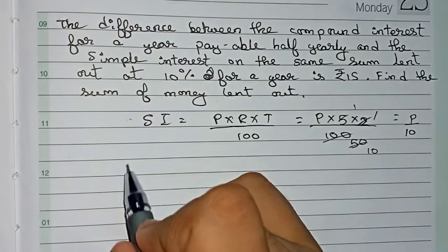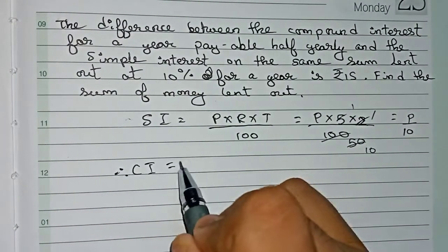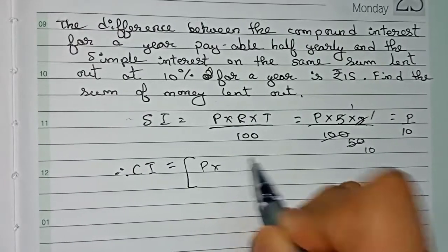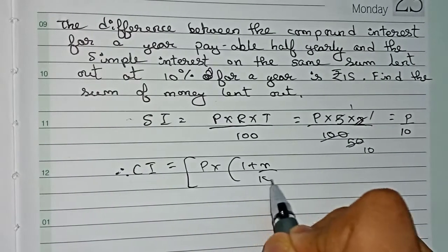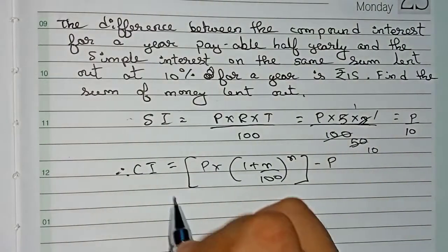So now we find out the formula for compound interest. Therefore CI equals principle × (1 + R/100)^n minus the principle. This is the formula for CI.